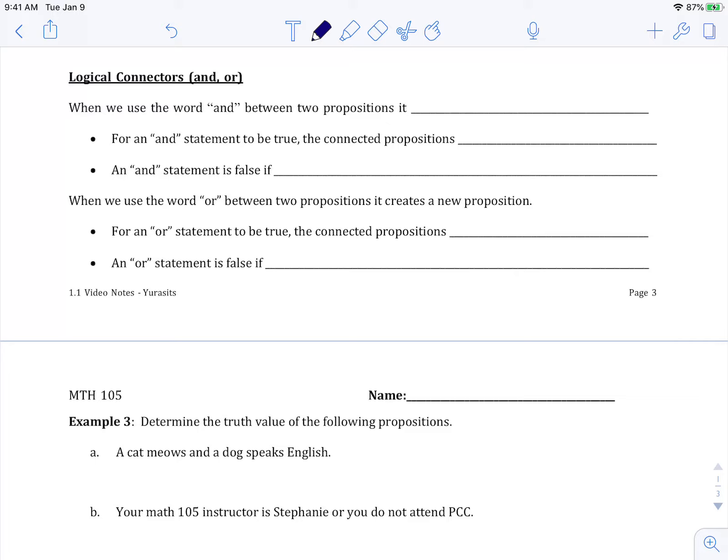So for logical connectors, this combines two propositions with the word AND or OR. When we use the word AND between two propositions it creates a new proposition.